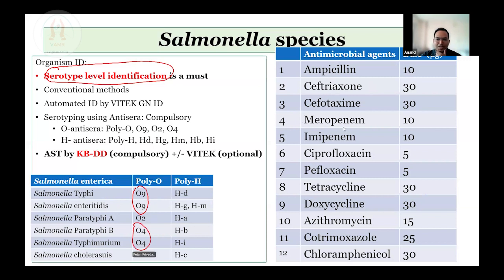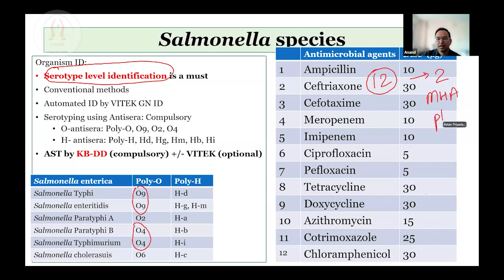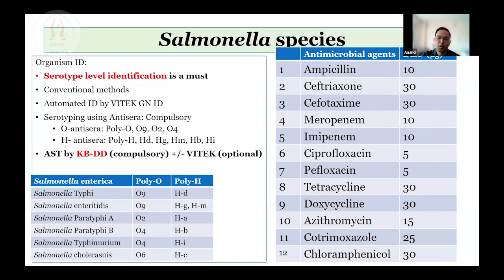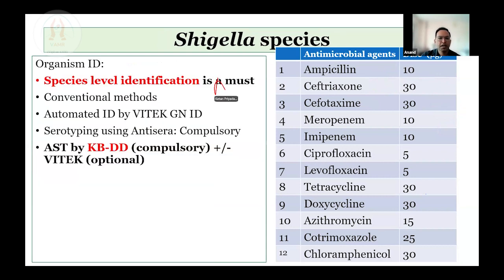The antimicrobials to be tested include 12 antimicrobials listed. Disk diffusion will be considered the main methodology for antibiotic susceptibility testing; Vitek will be optional. All isolates of Salmonella species irrespective of sample type will be included. For Shigella species, similar to Salmonella, identification can be done by conventional biochemical tests or Vitek GNID method, but it must be definitively confirmed to species level using antisera. AST should be mandatorily done by disk diffusion; Vitek is optional. These 12 antimicrobials need to be tested.